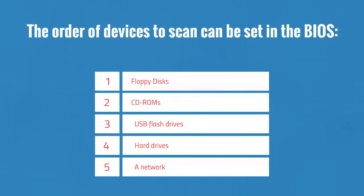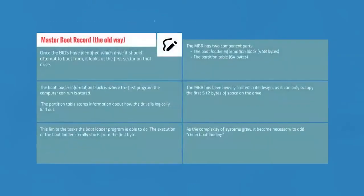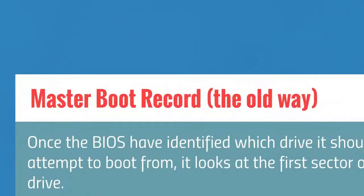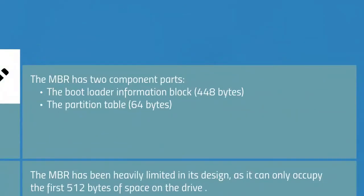There are two separate partition table formats: master boot record and GUID partition table. We will illustrate how both store data about what's on the drive and how they are used to boot the operating system. Once the BIOS has identified which drive it should attempt to boot from, it looks at the first sector on the drive. That sector should contain the master boot record, which has two component parts: the bootloader information block and the partition table.